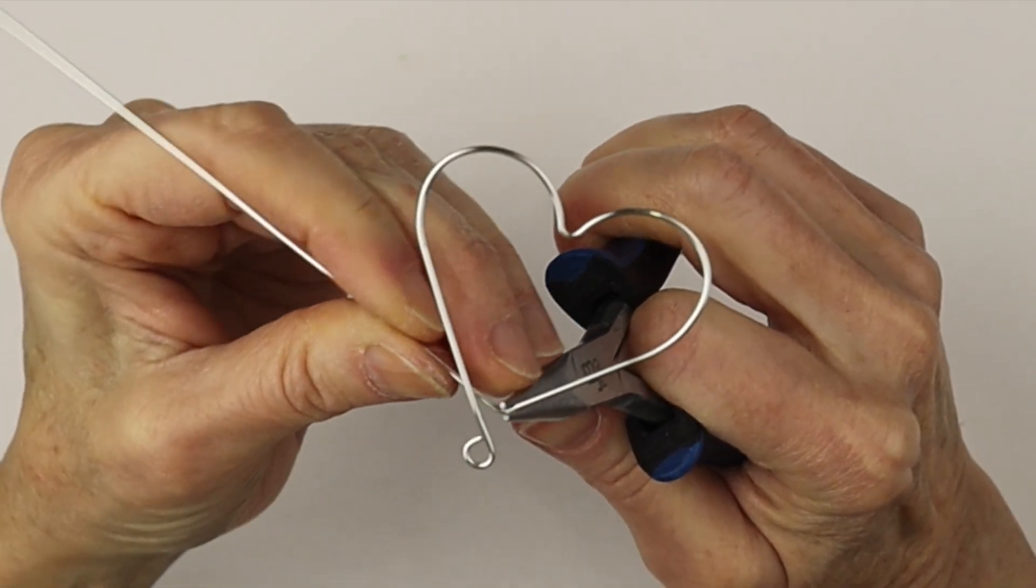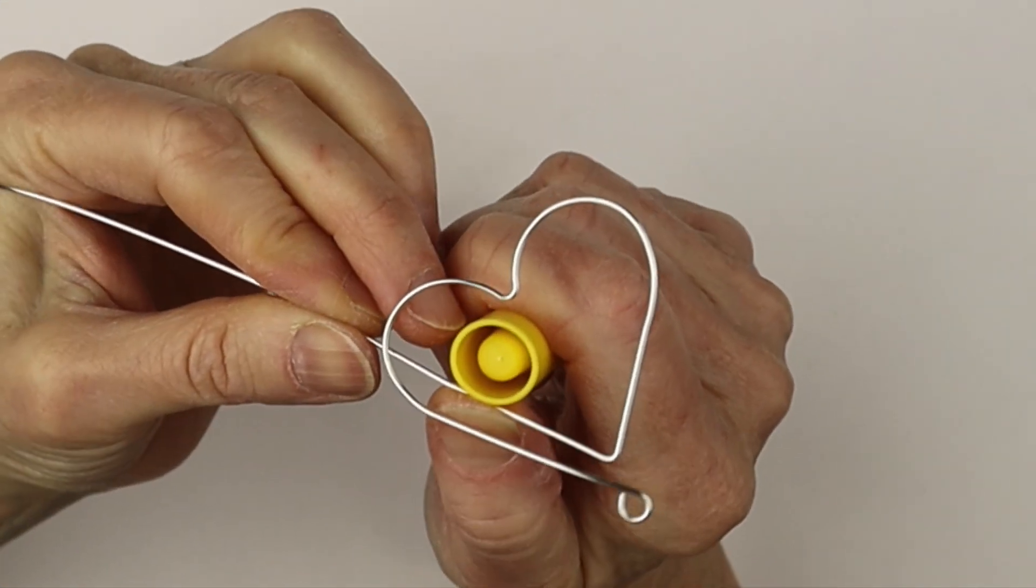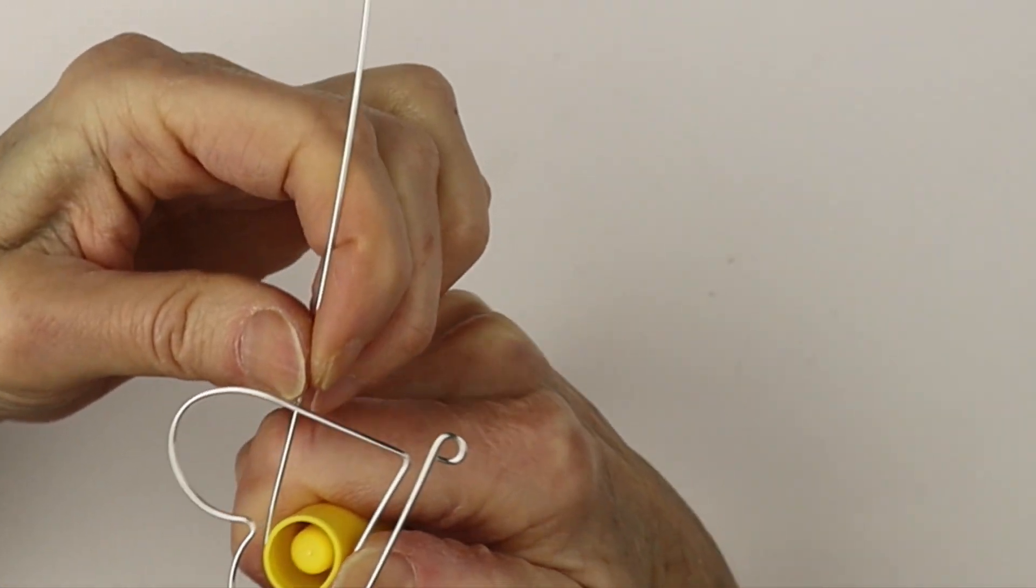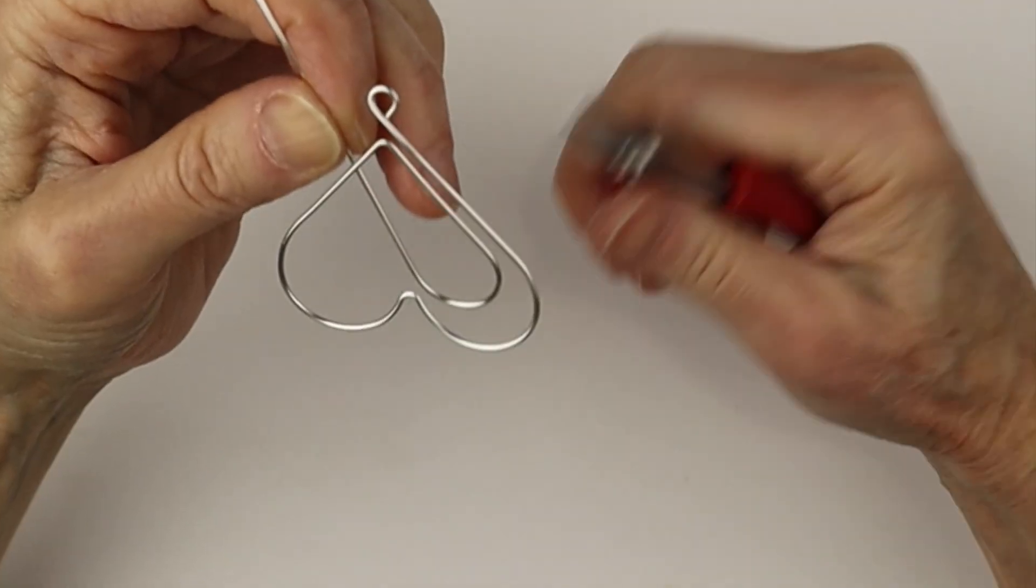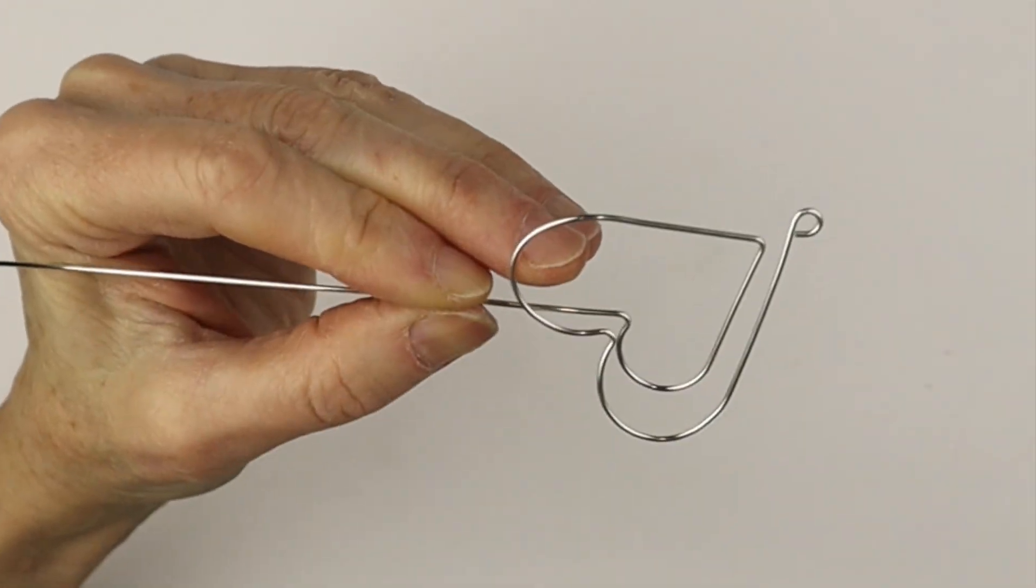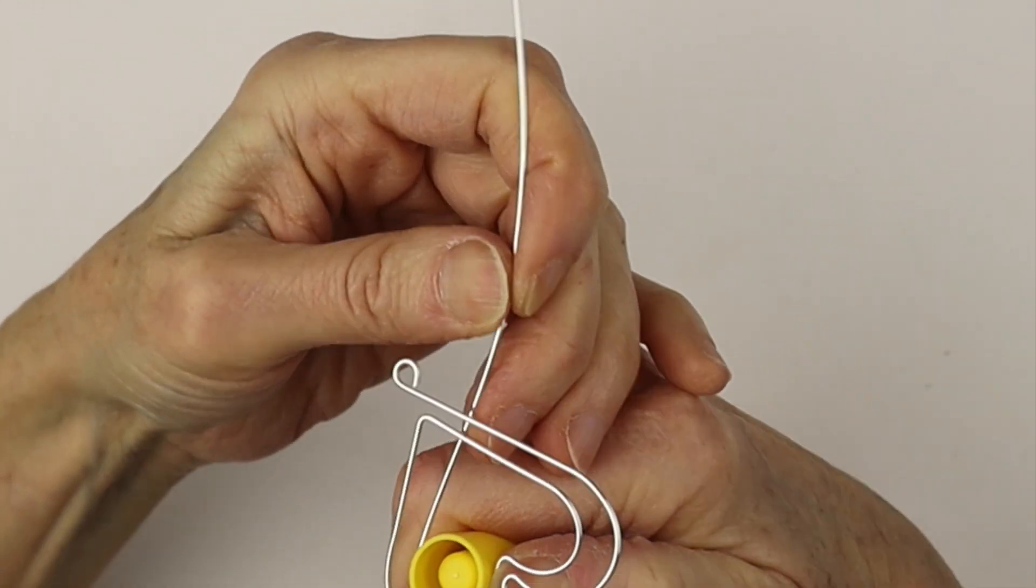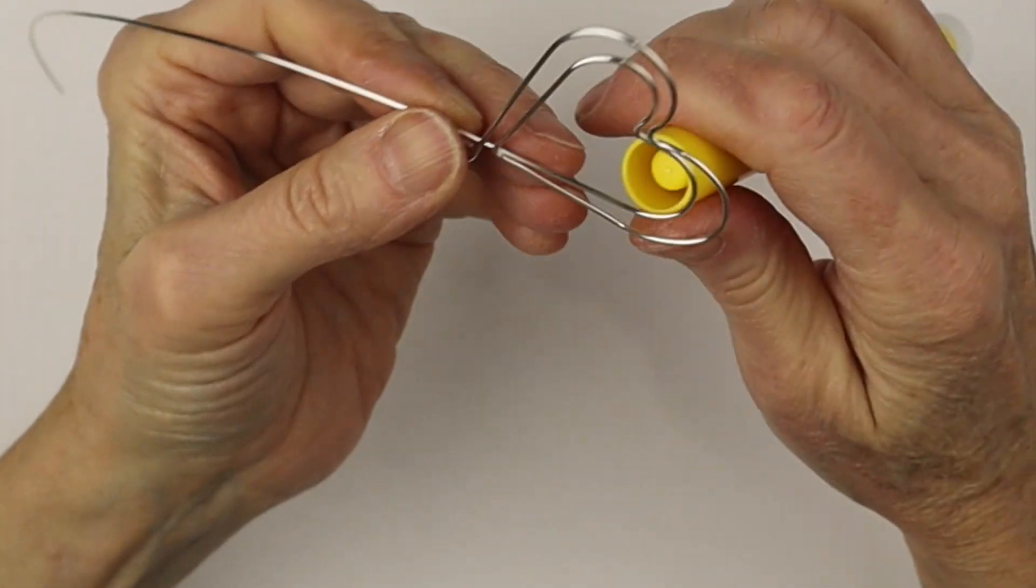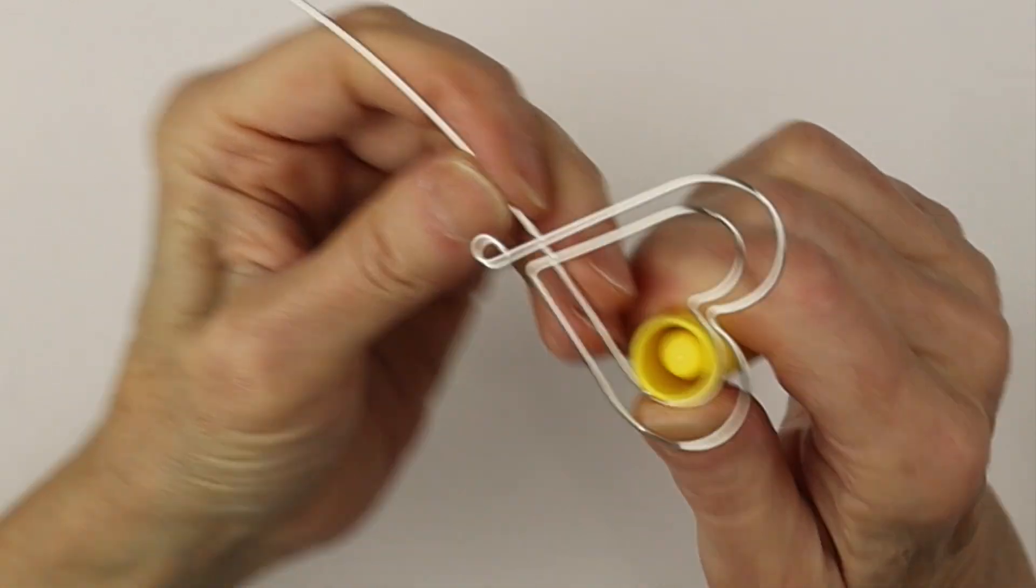And then we're going to take our round pliers or flat pliers and just bend it straight up. Then we're going to take the end of a Crayola marker to make a slightly smaller curve, then the fine nose pliers to bend it up again, and our Crayola marker to curve it around. So now we have two hearts. Adjust it as you need.